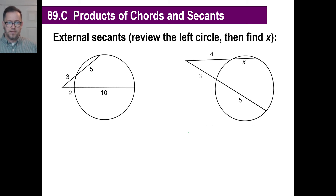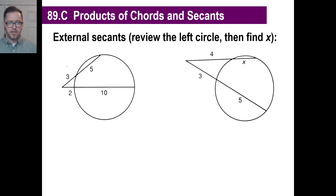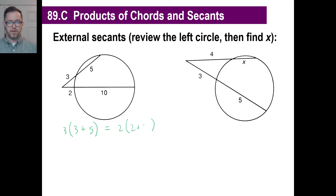Here's the second type — external secants. This is even more bizarre. If you're the puzzle type, you could pause and see if you can figure out how these two equal. You have to do something with the 3 and 5 to equal the 2 and 10. Here's how it works: you take the 3 and multiply it by both lengths together — 3 times (3 plus 5) equals 2 times (2 plus 10). So 3 times 8 is 24, and 2 times 12 is also 24. Absolutely killer.